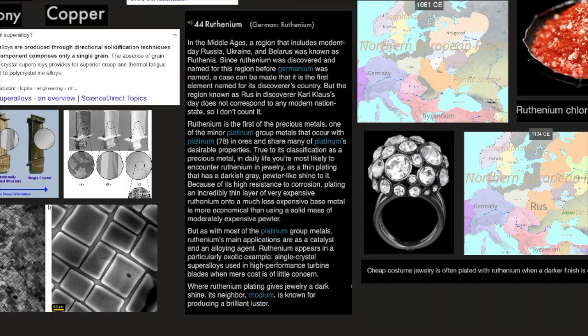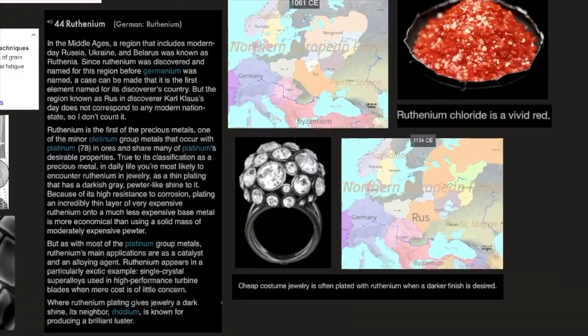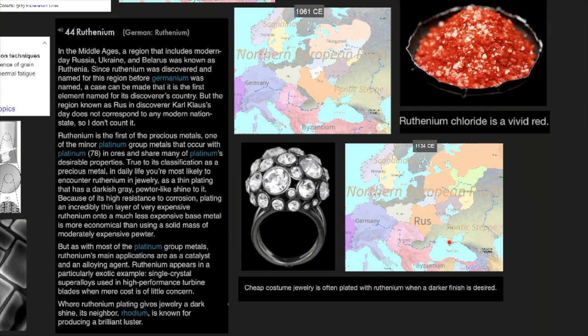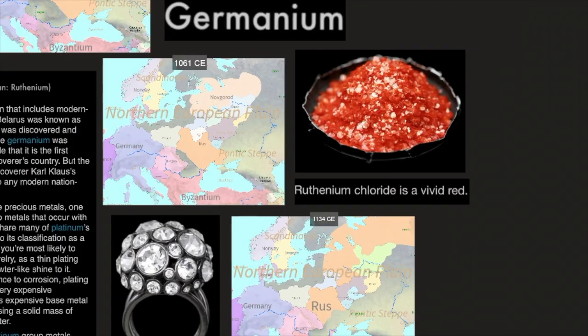In the Middle Ages, a region that includes modern-day Russia, Ukraine, and Belarus was known as Ruthenia. Since Ruthenium was discovered and named for this region before Germanium was named, a case can be made that it is the first element named for its discoverer's country. But the region known as Rus in Karl Klaus's day does not correspond to any modern nation-state, so the author doesn't count it.